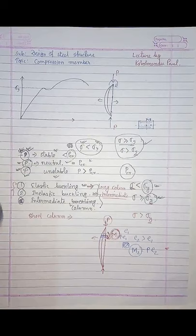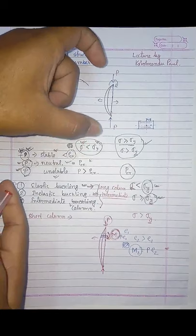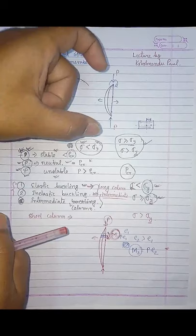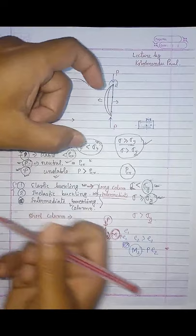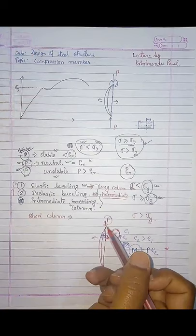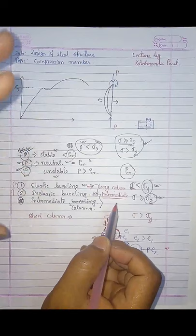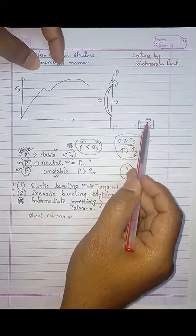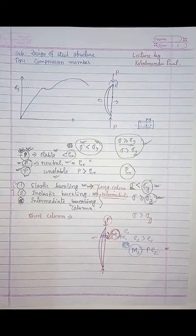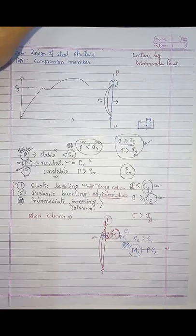In a short column, the length is very small. If we apply a compression load and keep increasing it, the stress will exceed the yield stress Sigma Y and the member will remain straight — it fails due to material failure, not geometric failure. An intermediate column lies between long and short: some fibers reach yield stress while interior fibers do not, and ultimately the member fails by buckling.